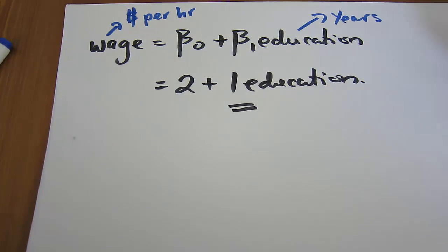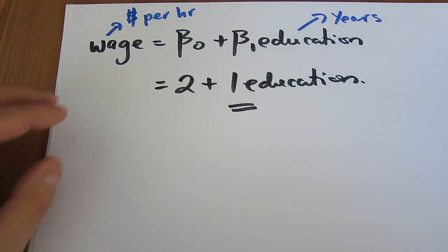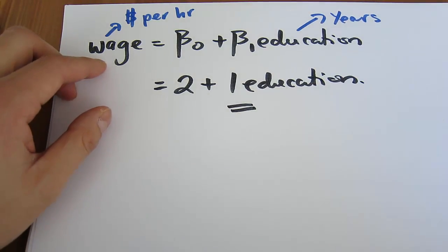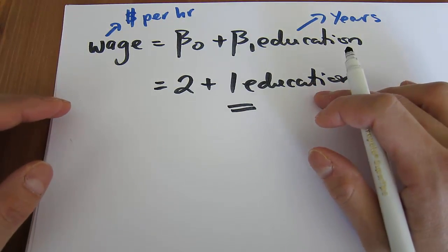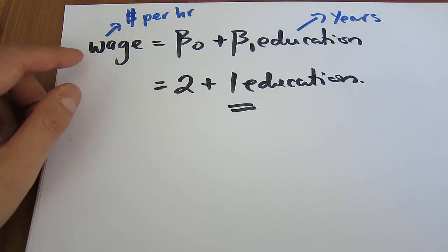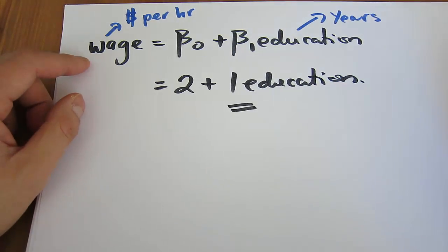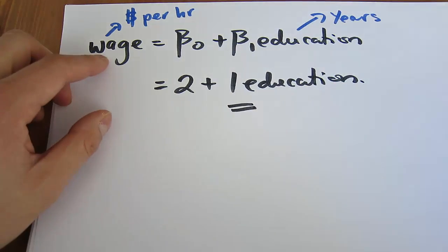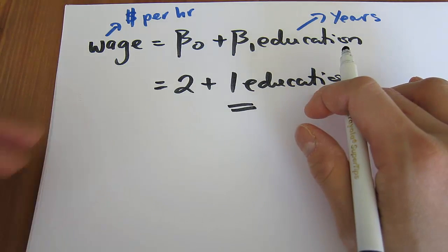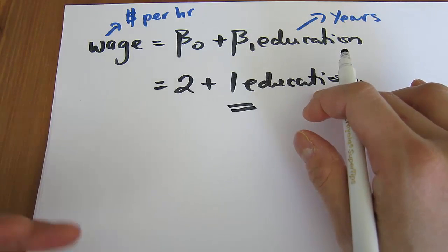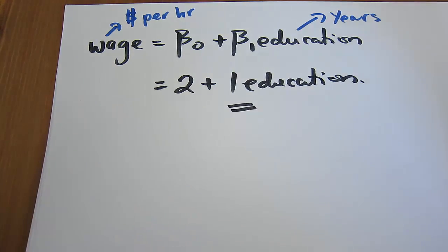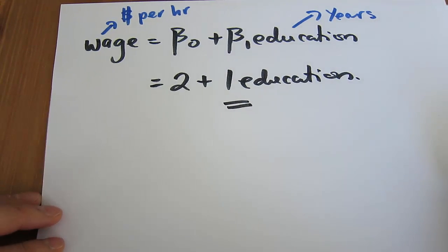Now in a simple regression, that's where we end. But there's a very common question: is it education that's leading to the increase in wages, or is it that more educated people tend to have a higher IQ, and that's why they get paid more because they learn better on the job? So maybe it's not education but other factors correlated with education — such as IQ, gender, or age — that have an impact on wage.